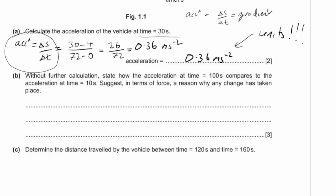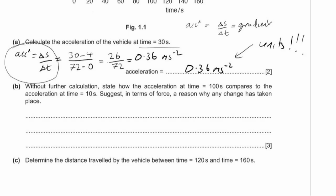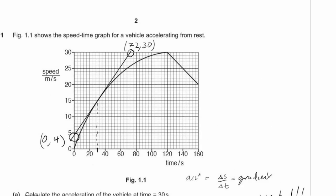Part B: without further calculation, state how the acceleration at time t equals 100 compares to the acceleration at time t equals 10. State, in terms of force, a reason why any change has taken place. Looking at the graph: at t equals 10 it's very steep — large acceleration. At t equals 100 it's much less steep — the acceleration is much smaller.